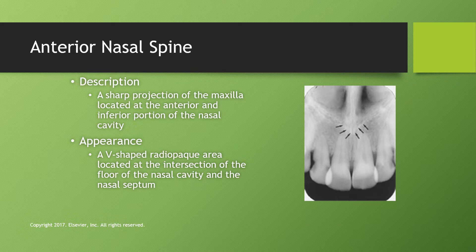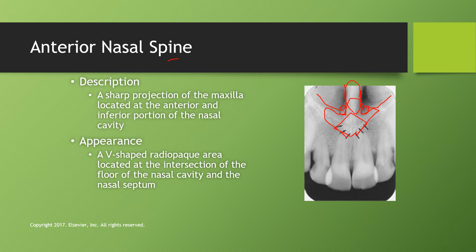The anterior nasal spine is called a spine because it is a thorn-like projection — specifically, a sharp projection of the maxilla at the anterior and inferior portion of the nasal cavity. It looks like a duck foot. The two small radiolucent areas between the feet of the duck are the superior foramina of the incisive canal, and above this you can see the nasal fossa. The nasal septum runs through the center. The anterior nasal spine appears as a V-shaped radiopaque area at the intersection of the floor of the nasal cavity and the nasal septum.